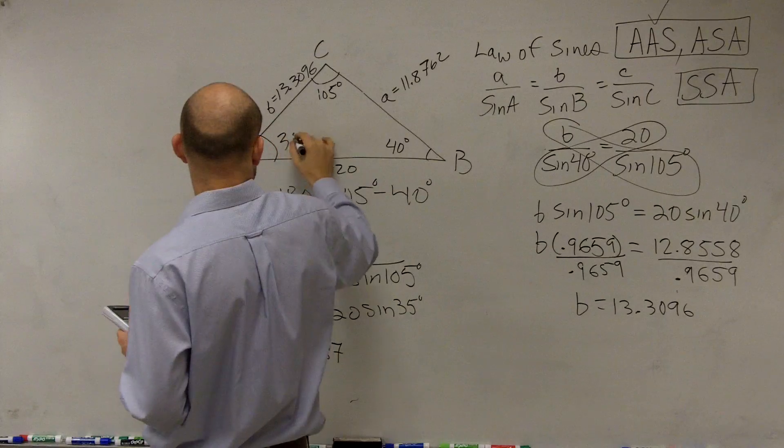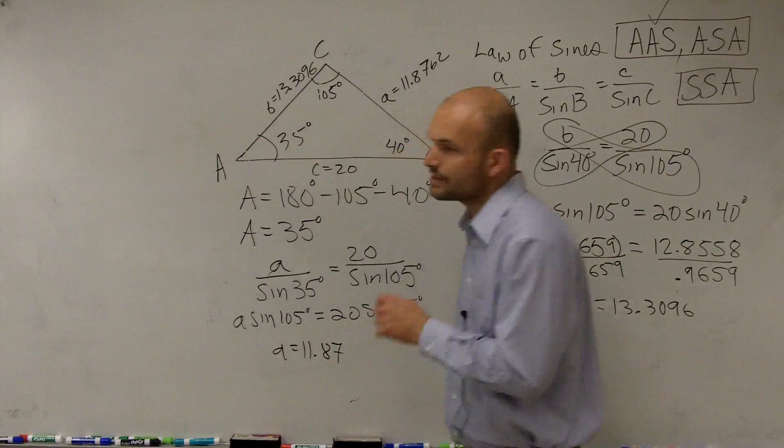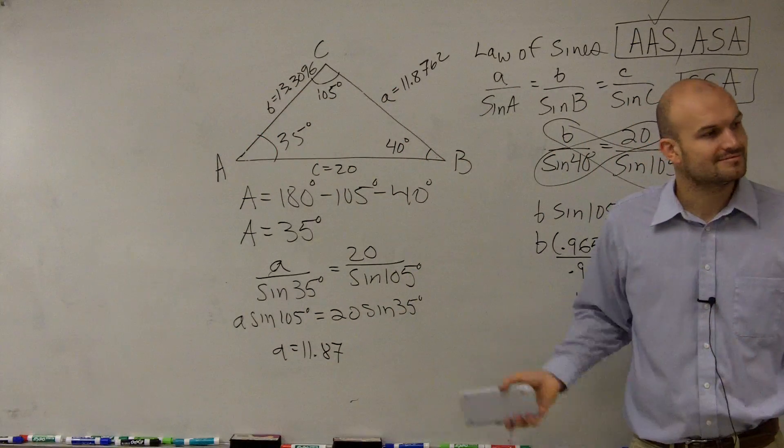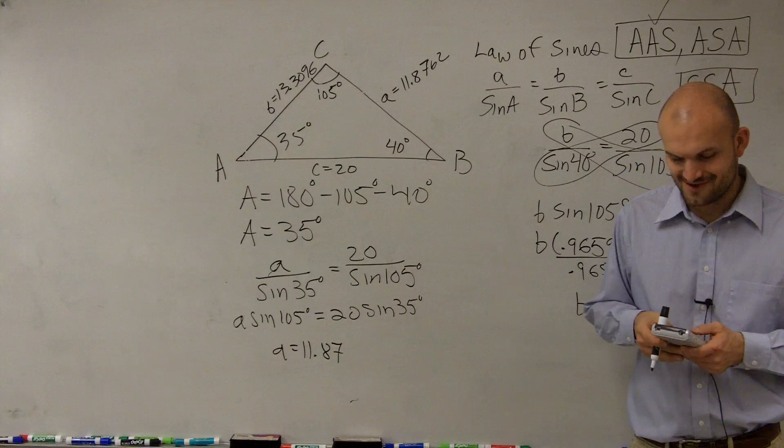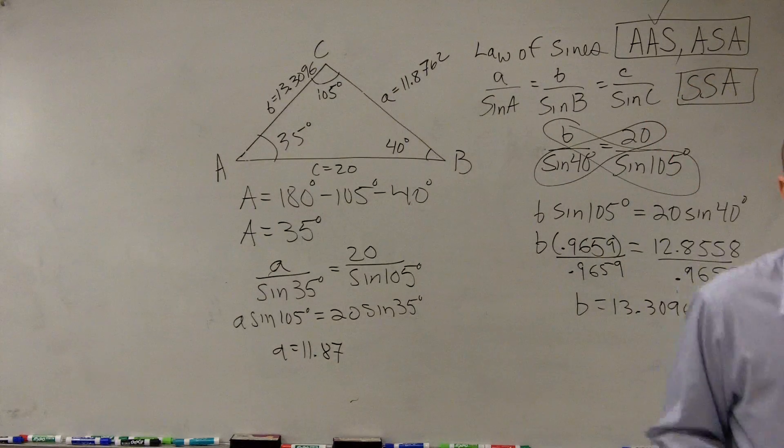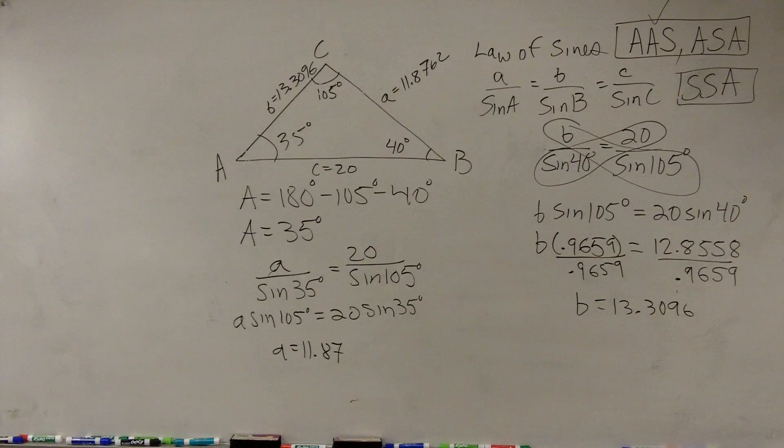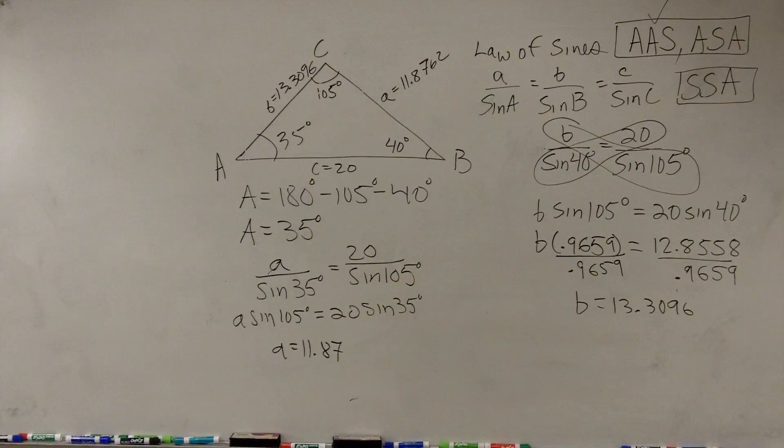And we said A was, what, 35 degrees? So there you go. That's it. You guys want to try one? So all we're doing is solving for A and B. And C.